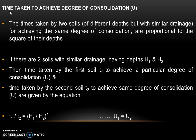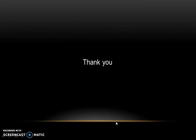Now we will find out the time taken to achieve degree of consolidation. The time taken by two soils of different depths but with similar drainage to achieve the same degree of consolidation are proportional to the square of their depths. If two soils with similar drainage have depths h1 and h2, then t1 divided by t2 equals (h1 divided by h2) squared, where u1 equals u2. Thank you.